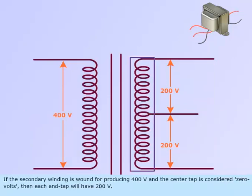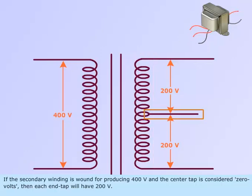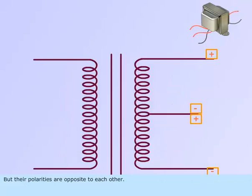If the secondary winding is wound for producing 400 volts, and the center tap is considered 0 volts, then each end tap will have 200 volts but their polarities are opposite to each other.